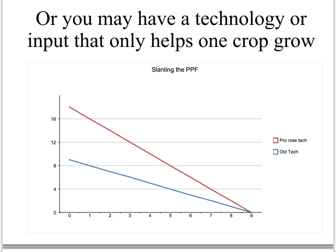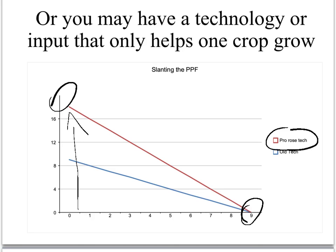Here we have a technology that helps only one crop grow — I call this the pro-roses technology. This technology increases the number of roses that you can grow on the land, but it has no change in the number of poppies. If you use all your land, you'll still have only nine poppies, but you will have 18 roses instead of nine. Now the price of roses falls because you can produce so many more, whereas poppies are now the scarce commodity.